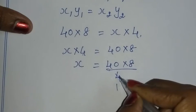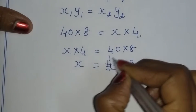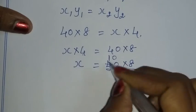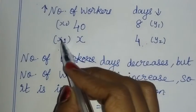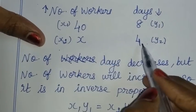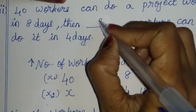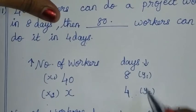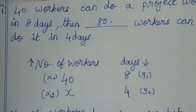4 table is 4, 4 table is 1, 4 table is 40. So multiply it by 80. 80 workers can do it in 4 days. That's all. Thanks for watching, children.